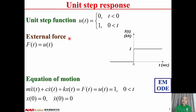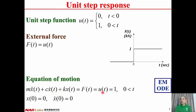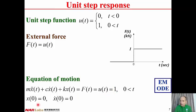If the external force is assigned to be the unit step function, then the equation of motion becomes Mx-double-dot + Cx-dot + Kx(t) = F, where F = u(t). We are interested in T greater than zero, so u(t) is a constant equal to one. There are two initial conditions: initial displacement x(0) = 0, and initial velocity x-dot(0) = 0.